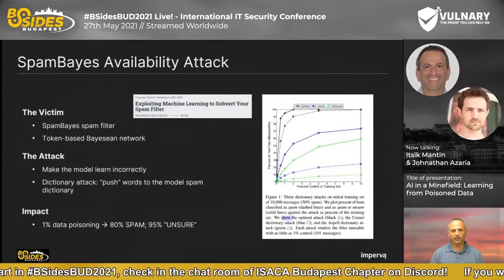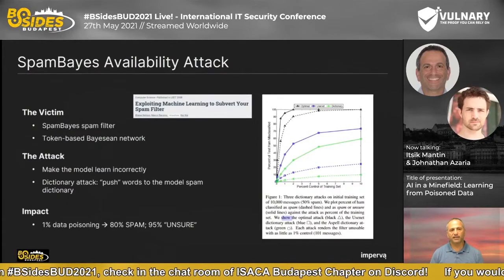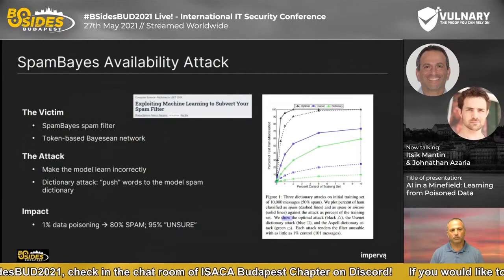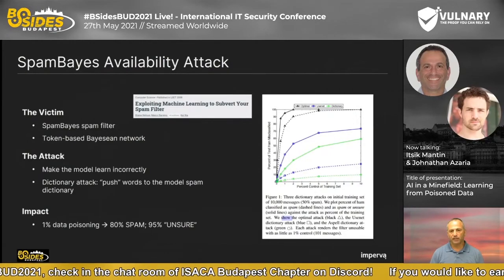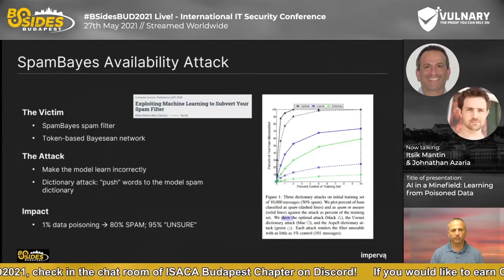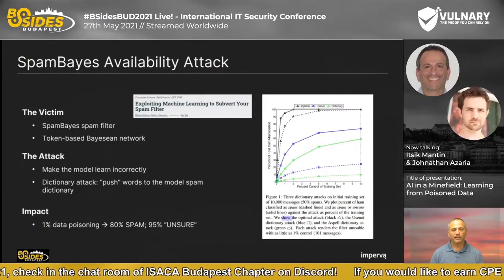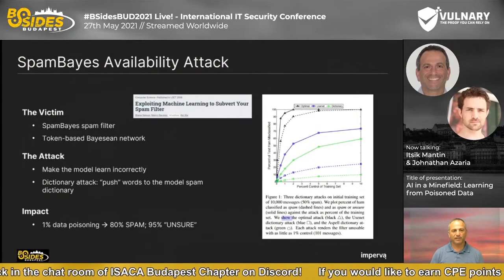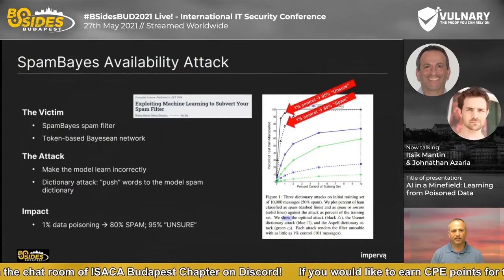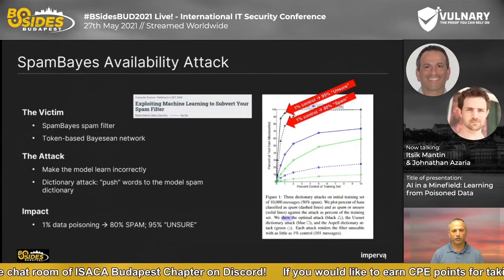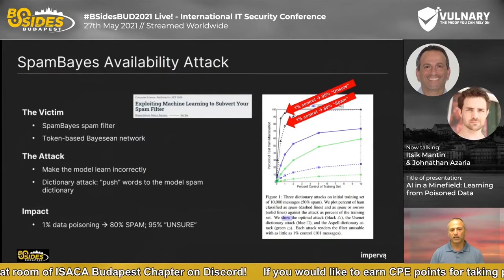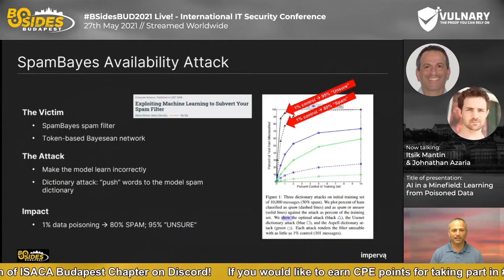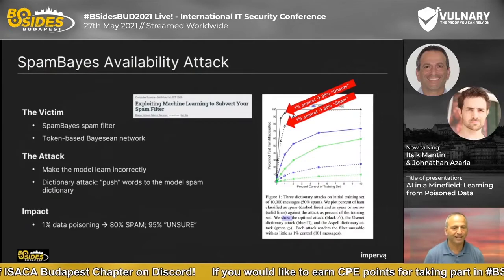Another example: a research paper on the SpamBayes spam filter. The researchers carried out an availability attack — they took popular words characterizing many legitimate emails, created many emails classified as spam, and pushed them into SpamBayes. With control of just 1% of the training messages, they were able to make the model classify 80% of benign messages as spam and 95% as unsure — numbers that rendered the model completely useless.